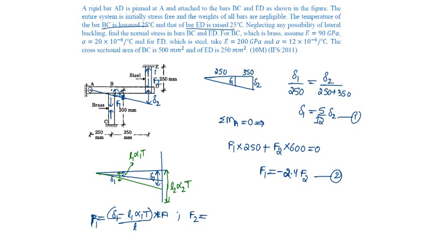So the prevented expansion is (L2 alpha2 T minus delta 2) divided by L2; multiplied by Young's modulus gives stress; multiplied by area of bar 2 gives the force, with modulus E2. Let us find F1 and F2.